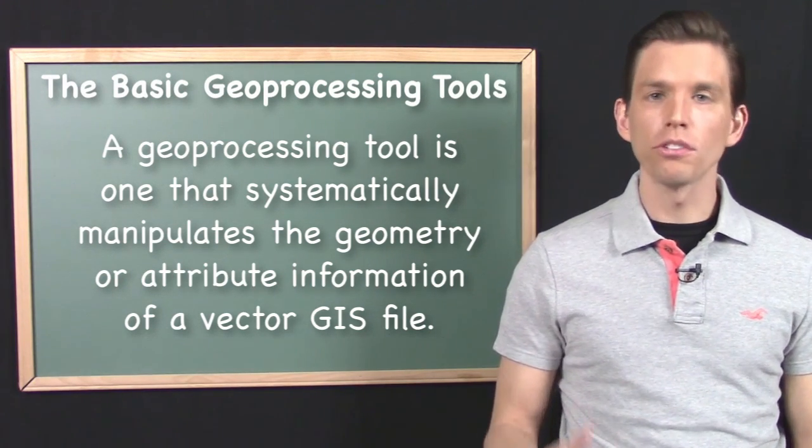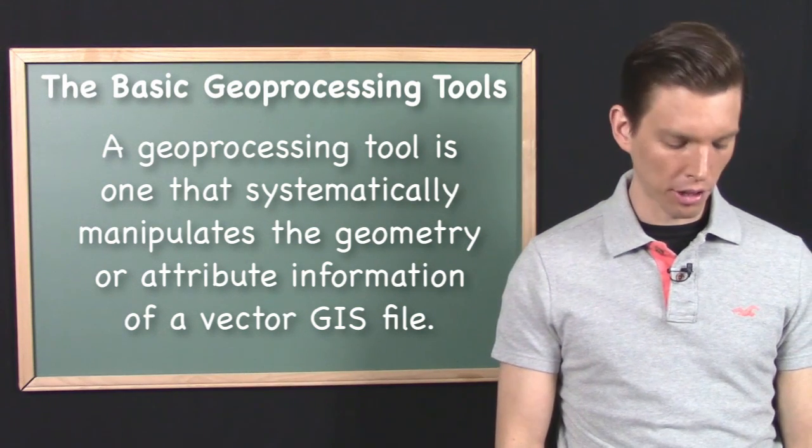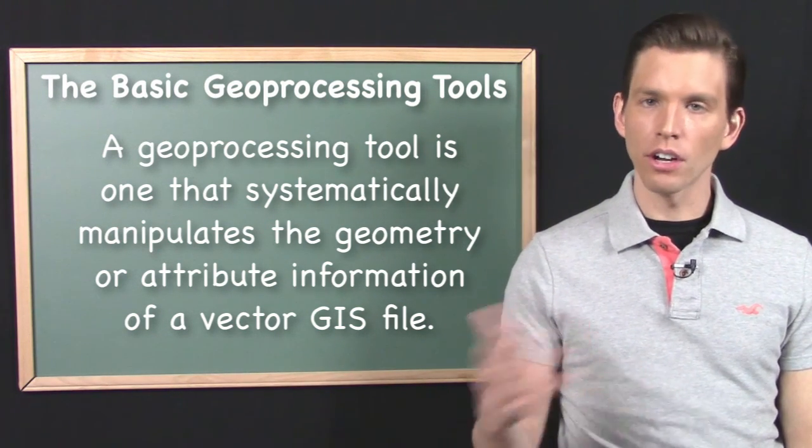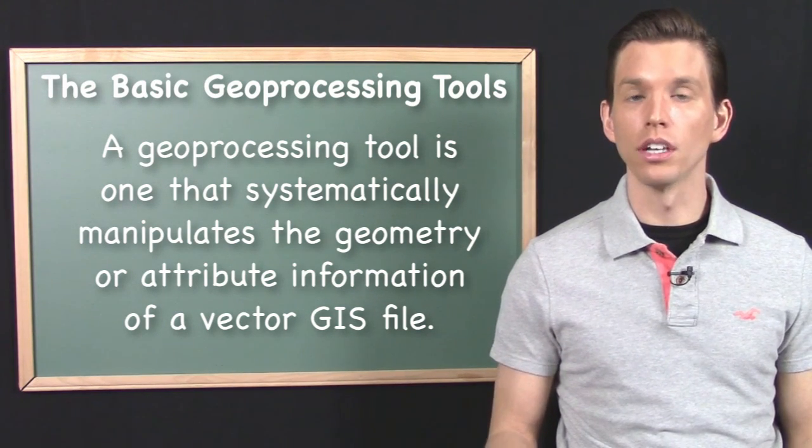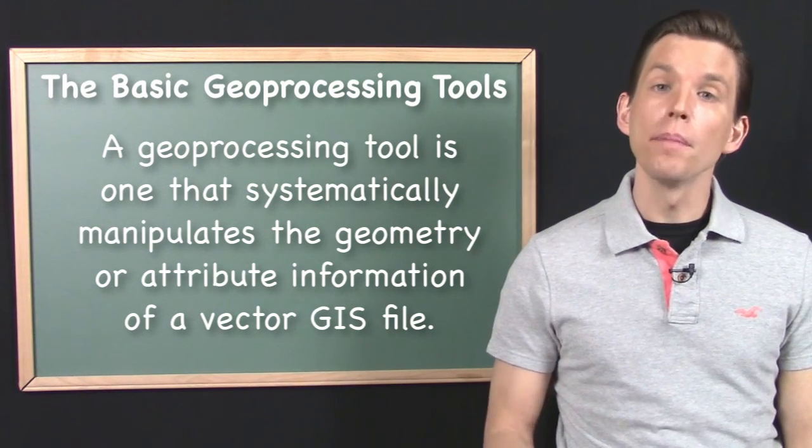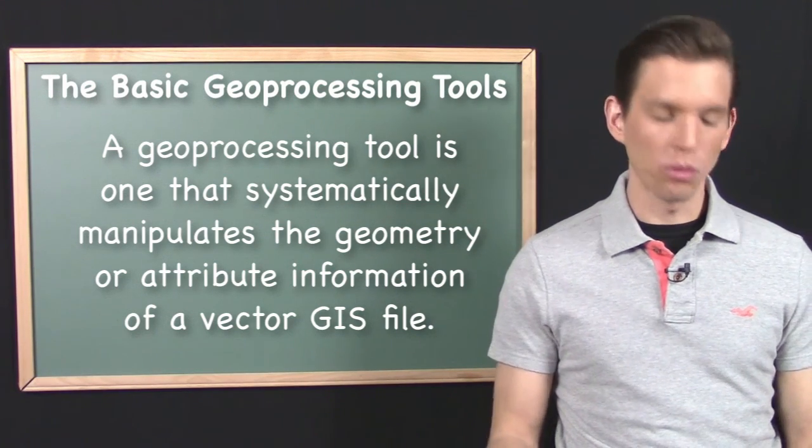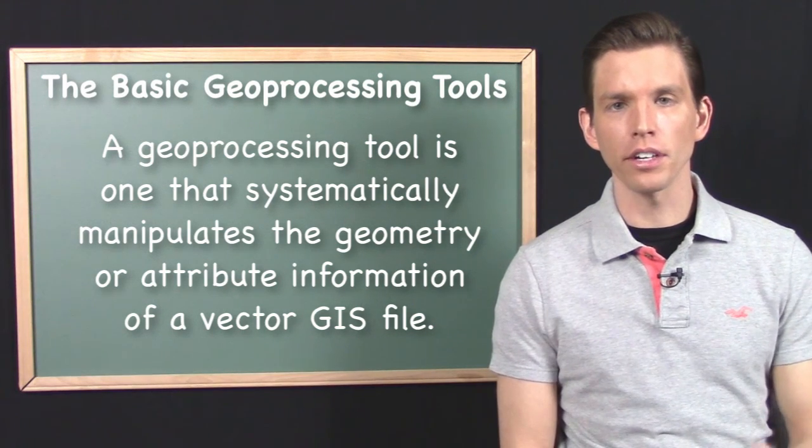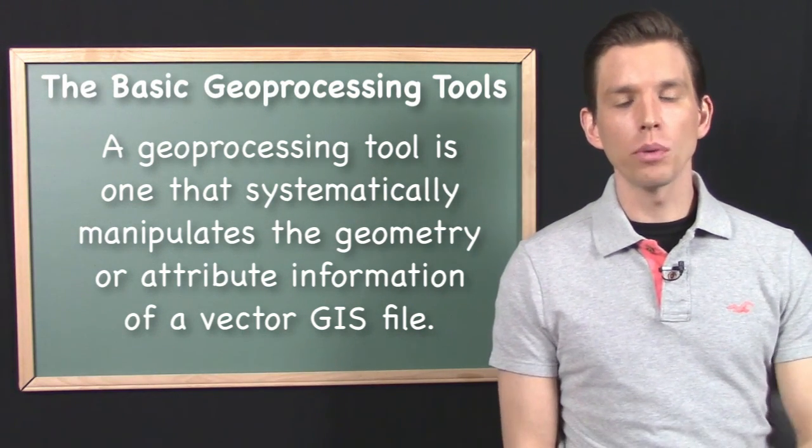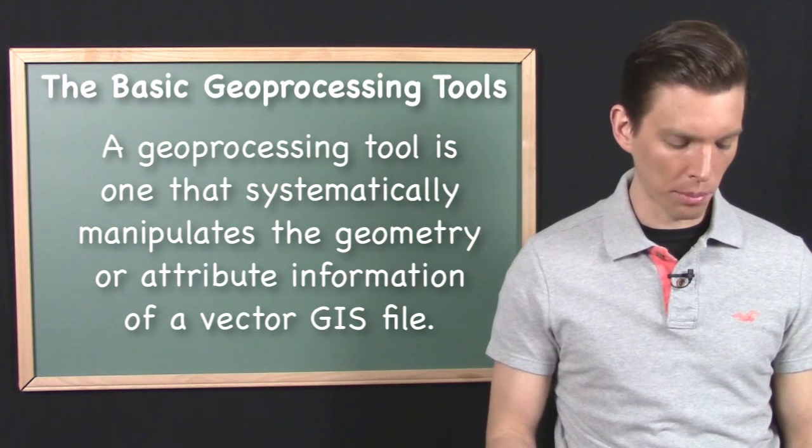Geoprocessing tools do both. So depending on exactly how you want to count, there could be quite a few geoprocessing tools because there are many different ways that we could go about making this systematic manipulation of geometry and attributes in Vector data. But it is a finite list. There is a finite number of ways in which we could do this. But nonetheless, it's probably a fairly sizable list and we don't have time to cover all of them in this course. And I don't include all of them in the core Vector GIS toolkit anyway. I just use a subset here.